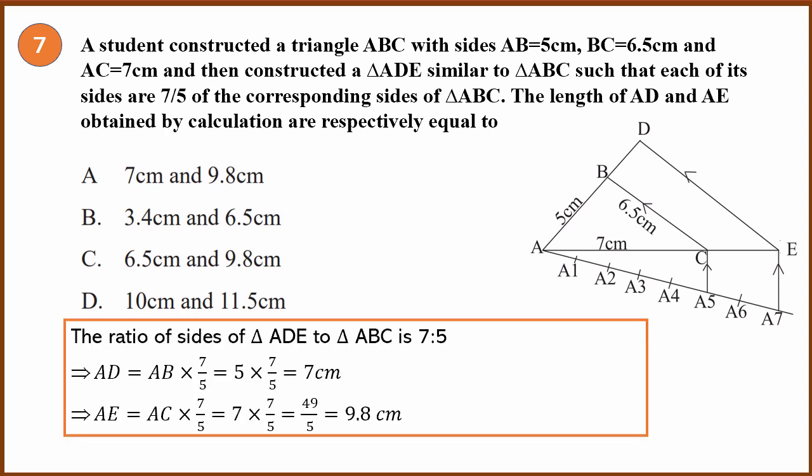The scale factor is given as 7 divided by 5. So now therefore we have to find the new sides. Let's see what sides we have to find. ABC is the old triangle. ADE is the new triangle which is similar to ABC.